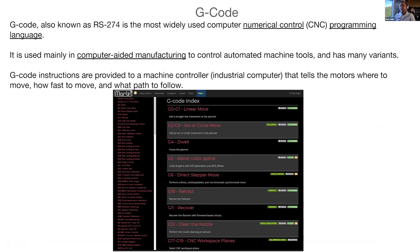Once you've brought your STL, OBJ, or 3D file format into the slicer and added options such as support materials and infill, you would typically output G-code. G-code is also known as RS274. It's the most widely used computer numerically controlled programming language, used mainly in computer-aided manufacturing to control automated machine tools and has many variants or flavors. G-code instructions are provided to a machine controller — an industrial computer — that tells the motors where to move, how fast to move, and what path to follow.